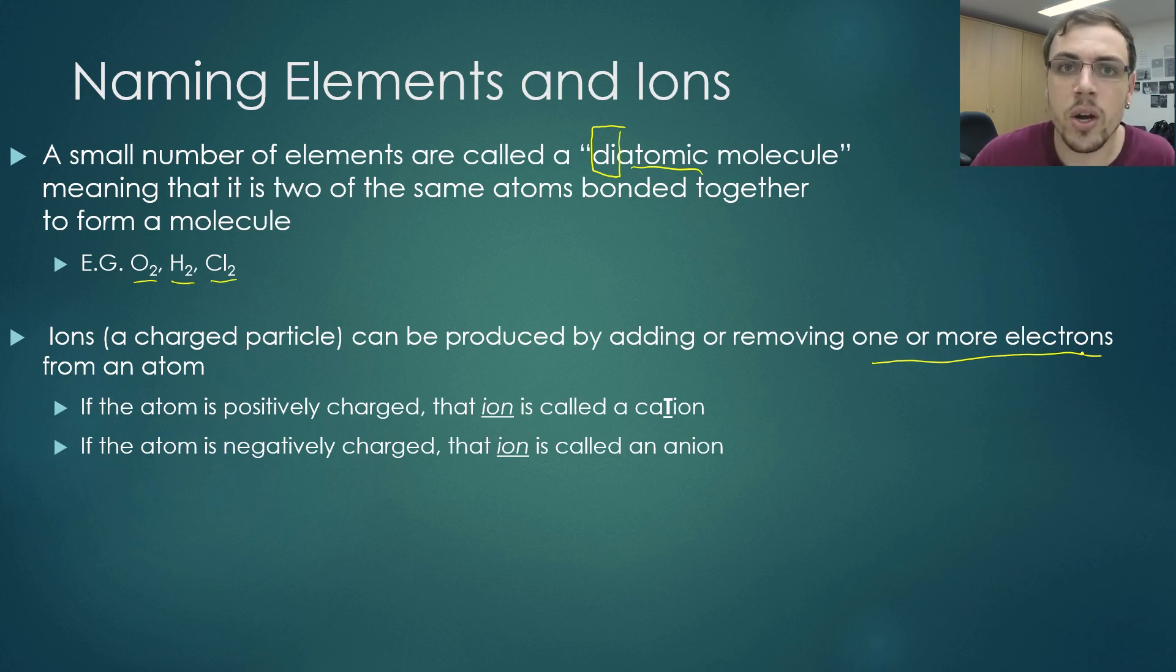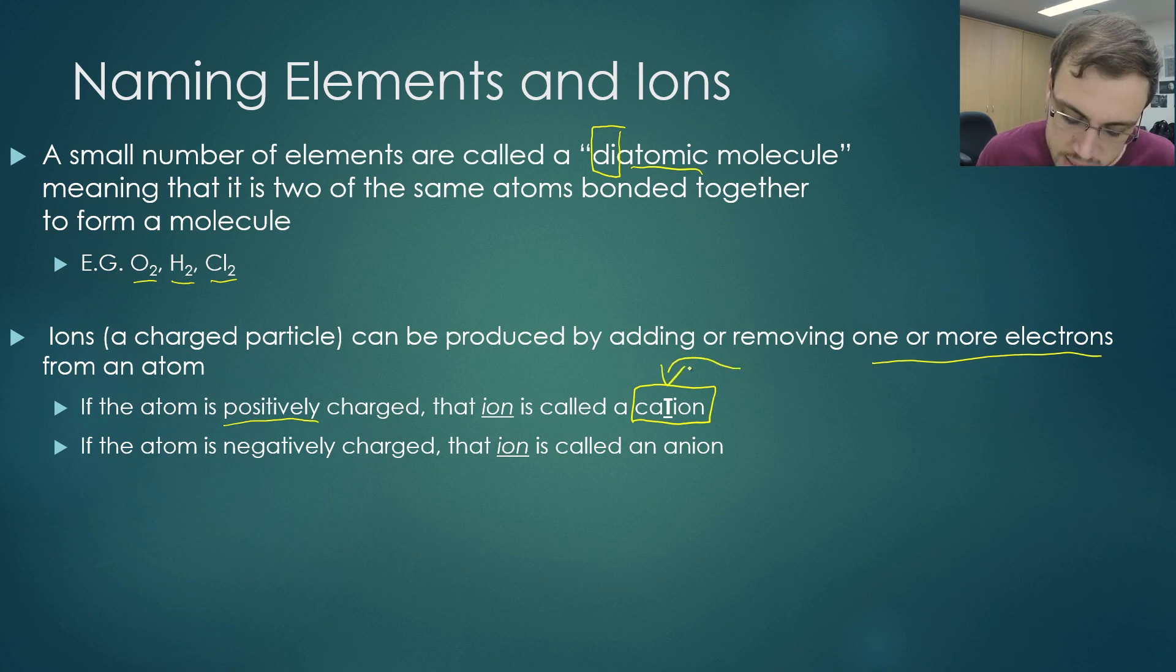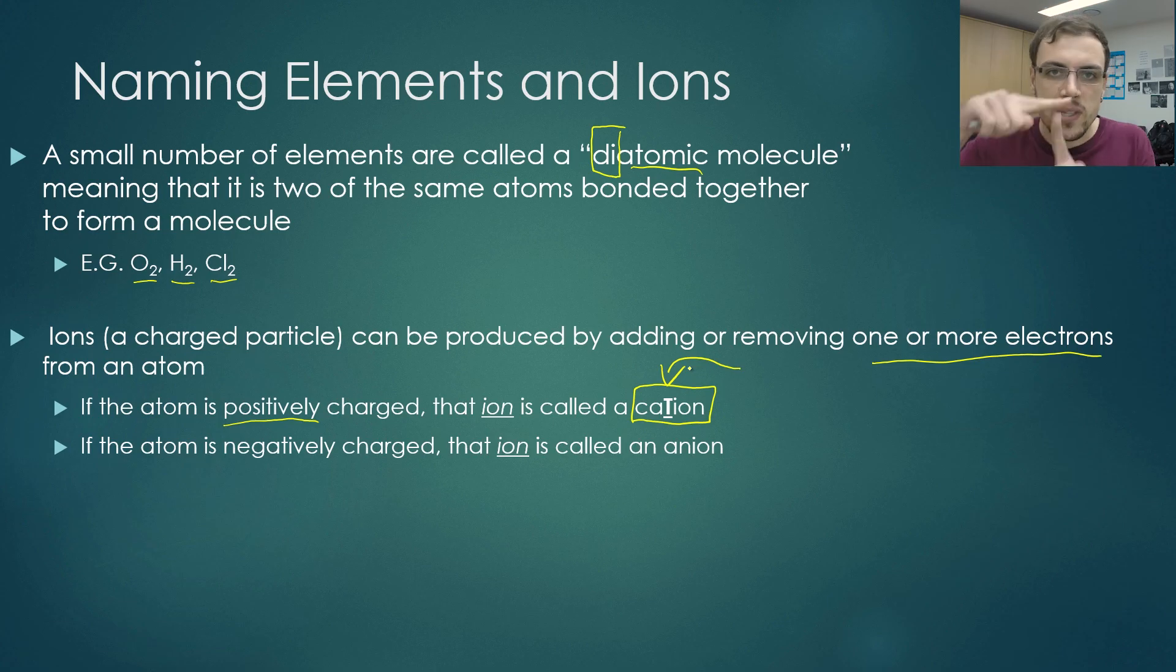There are two new names that you're going to learn here that absolutely must be memorized. If an atom is positively charged, then that means that it is called a cation. How I like to remember this, and this is why I've bolded and underlined this T, is that a cation, the T, looks like a positive.